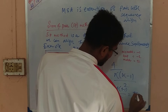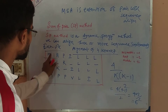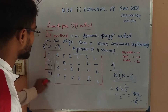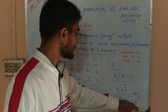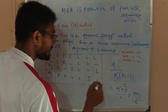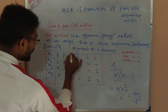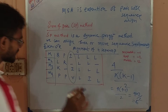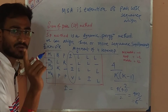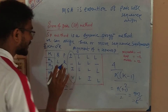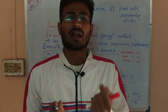For four sequences, the number of possible pairs is 4 into 3 divided by 2, which equals 6. So we have 6 possible pairs. For each pair, we evaluate match, mismatch, and gap.